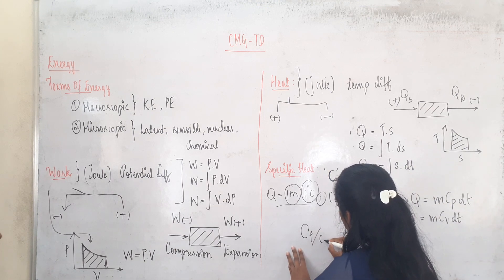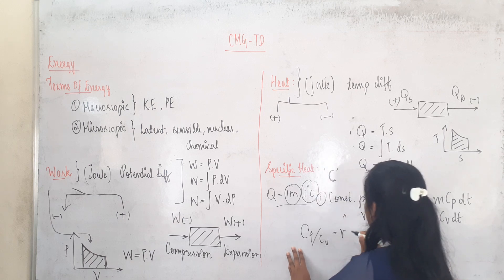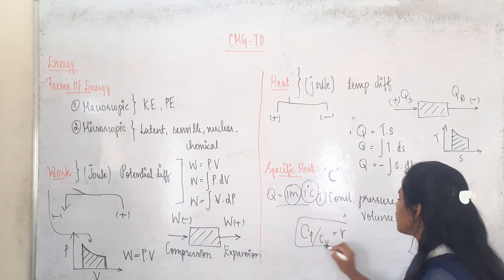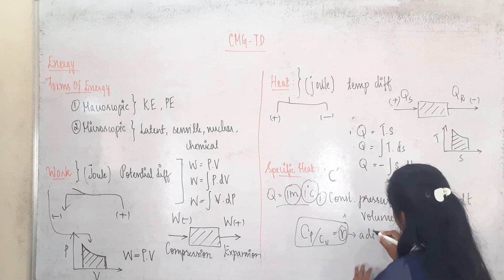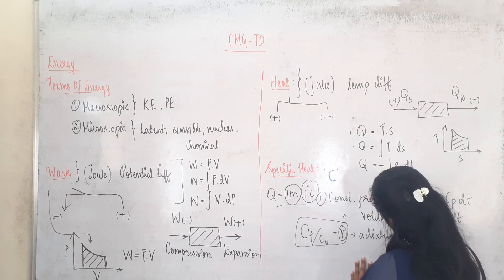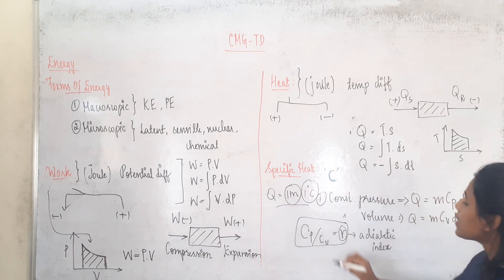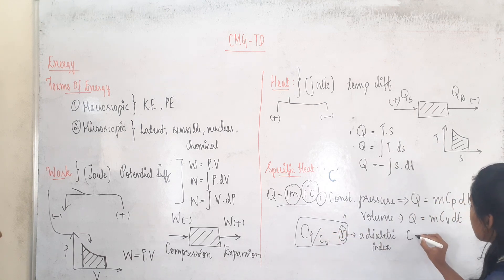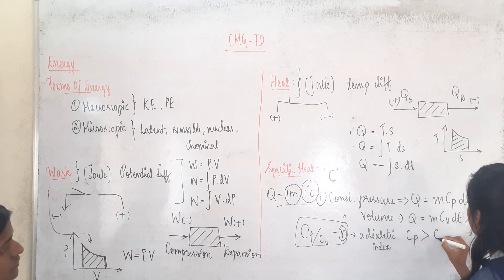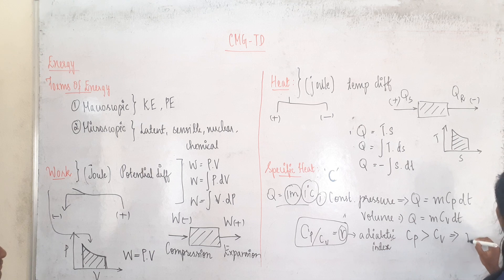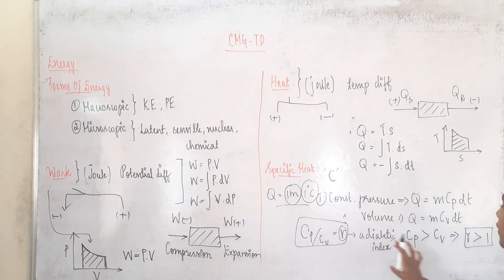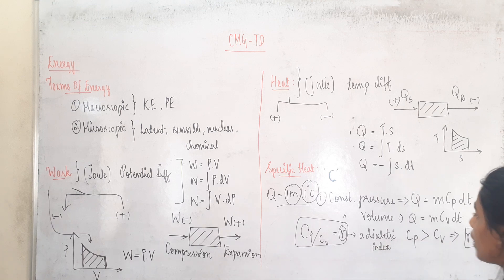Cp by Cv is equal to gamma. This is an important term and gamma represents the adiabatic index. Cp will always be greater than Cv, from which we infer that gamma will always be greater than 1.